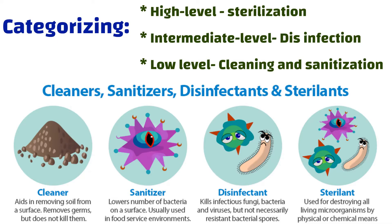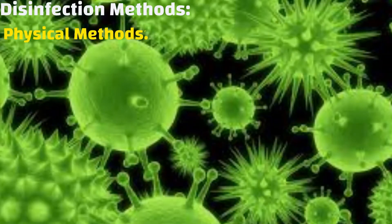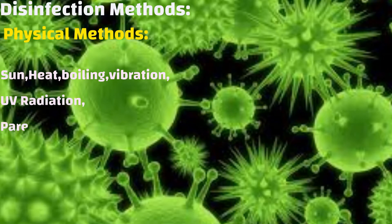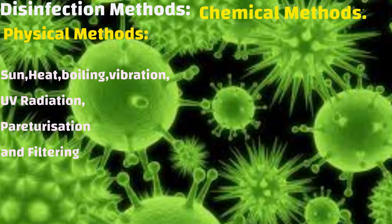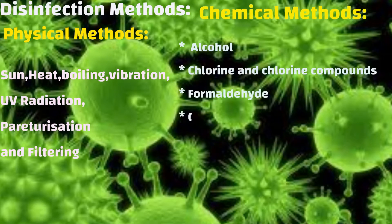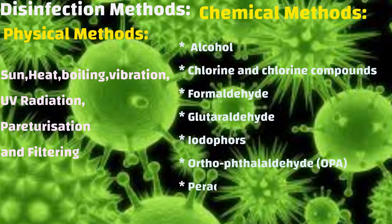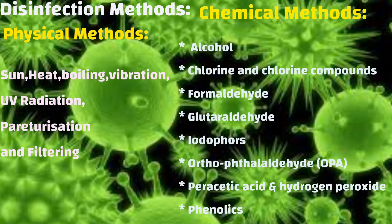Disinfection is categorized into three levels: one — high level, which is sterilization; two — intermediate level, which is disinfection; three — low level, which is cleaning and sanitization. Disinfection methods include physical methods such as sun, heat, boiling, vibration, UV radiation, pasteurization, and filtering; and chemical methods such as alcohol, chlorine and chlorine compounds, formaldehyde, glutaraldehyde, iodophors, orthophthalaldehyde (OPA), peracetic acid, hydrogen peroxide, and phenolics.